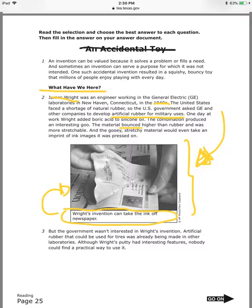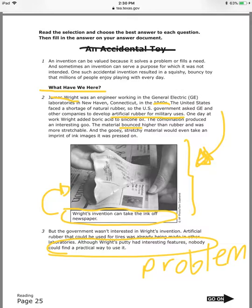They are talking about this photo here, so I know they're going to ask me for the best summary, vocabulary words, main idea for certain passages, and about text features — I need to keep that in mind as I read. But the government wasn't interested in Wright's invention. Artificial rubber that could be used for tires was already being made in other laboratories. Wright's putty had interesting features, but nobody could find any practical way to use it.